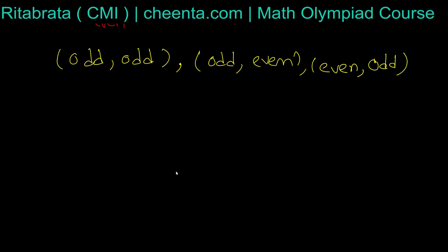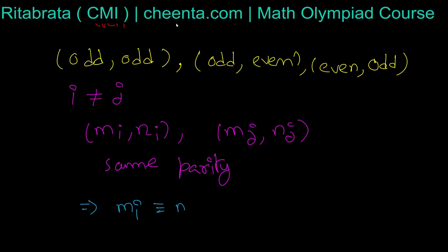Now let's see whether a parity can repeat. Say a parity repeats, so we have i ≠ j and the parity of (mᵢ, nᵢ) and (mⱼ, nⱼ) are the same. Same parity means mᵢ ≡ mⱼ (mod 2) and nᵢ ≡ nⱼ (mod 2).